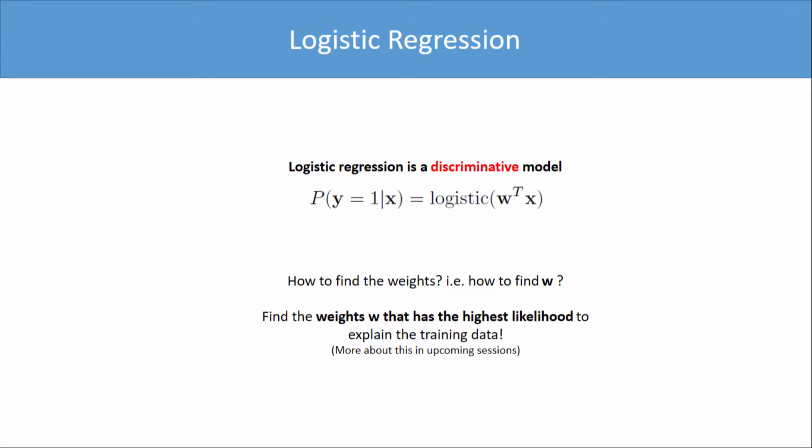How do you find the weights? You find the w that best fits the data. Because you have a probabilistic model now, with an assumption about how the data is generated, you can maximize the probability of finding the w that fits the data the best. The exact way in which it is done will be spoken about in the upcoming session, but this gives you a heads-up as to what you are trying to model.